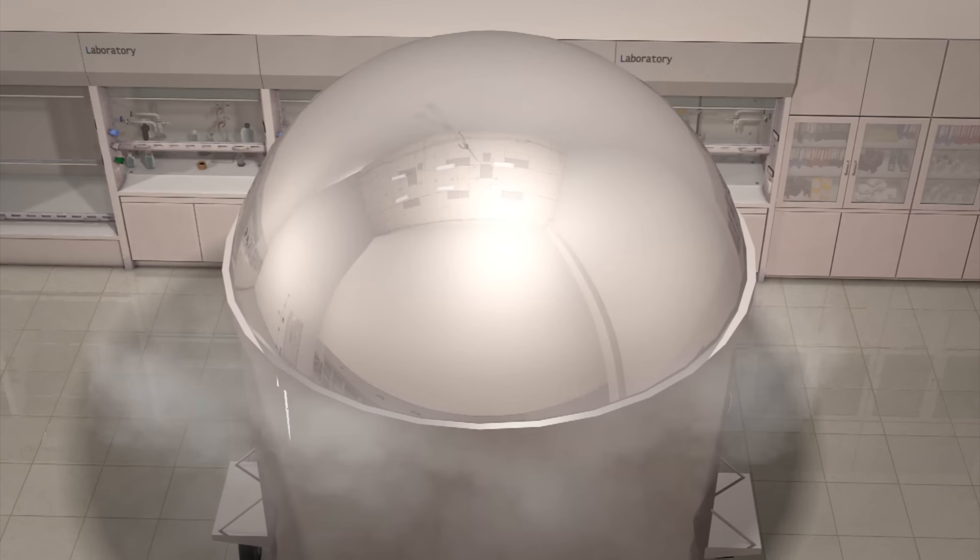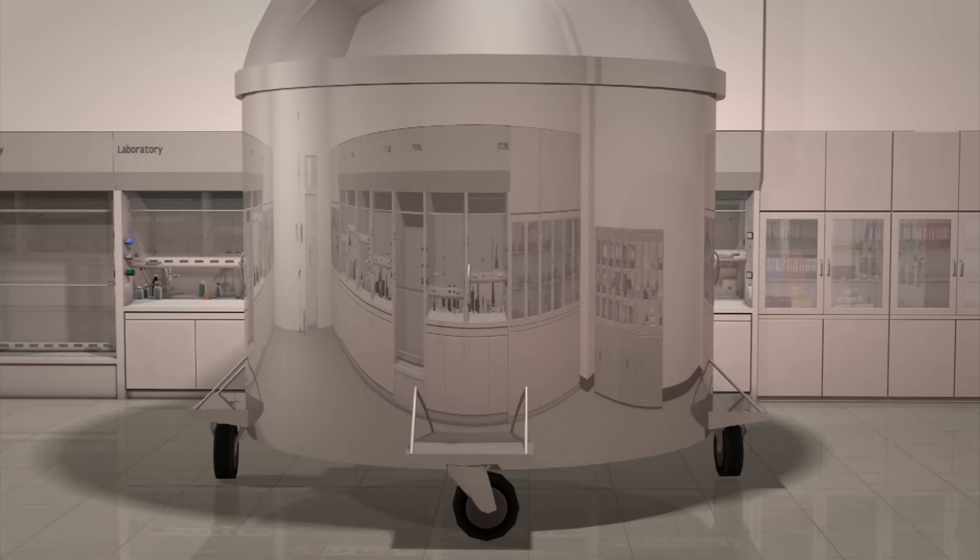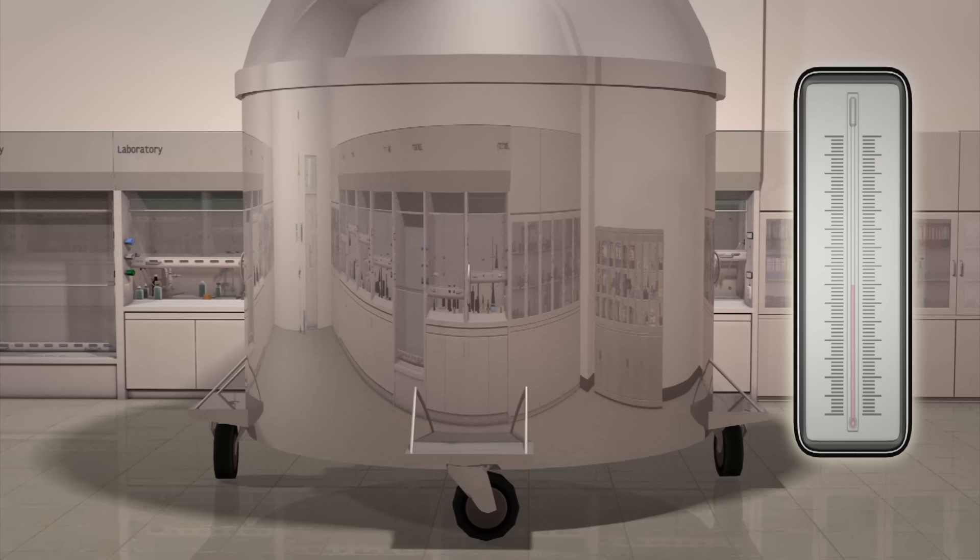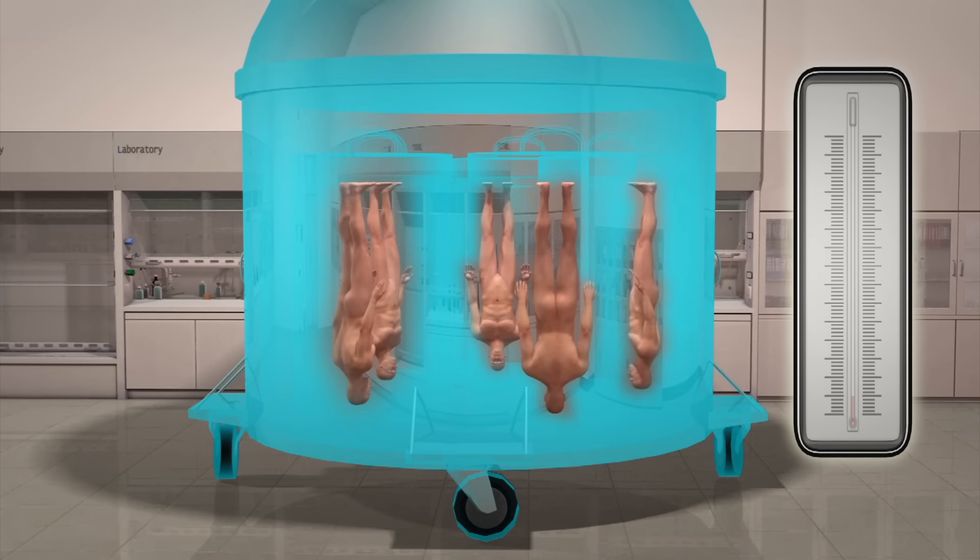Between four and six bodies are typically held in the tanks. They are stored with heads facing down to ensure the brains would stay immersed in the freezing liquid, even if there is a leak in the container.